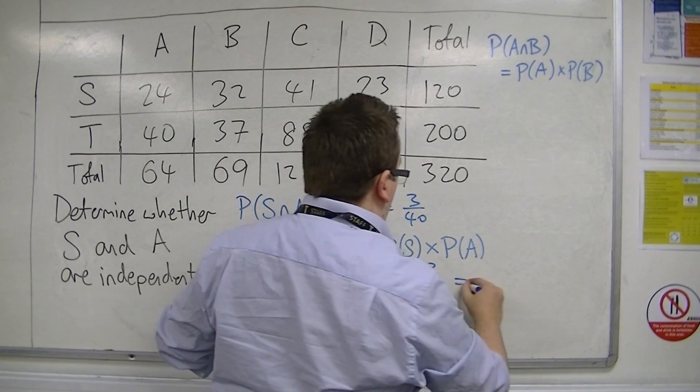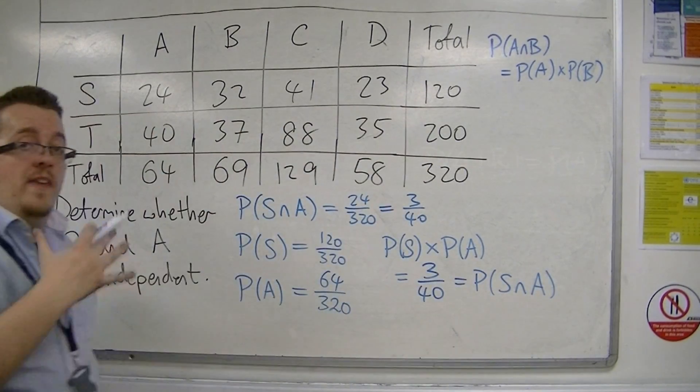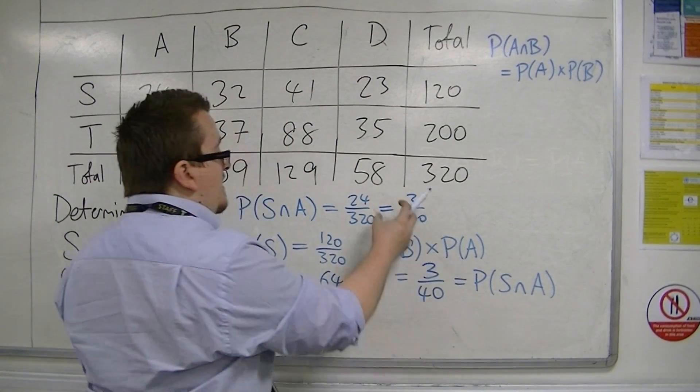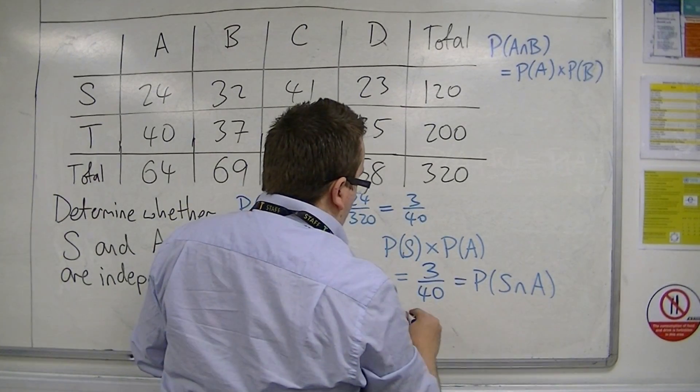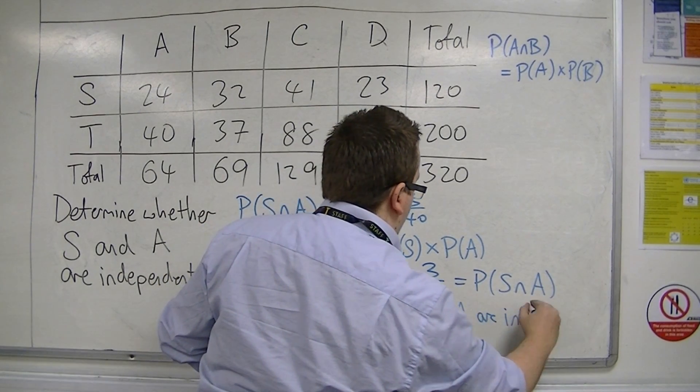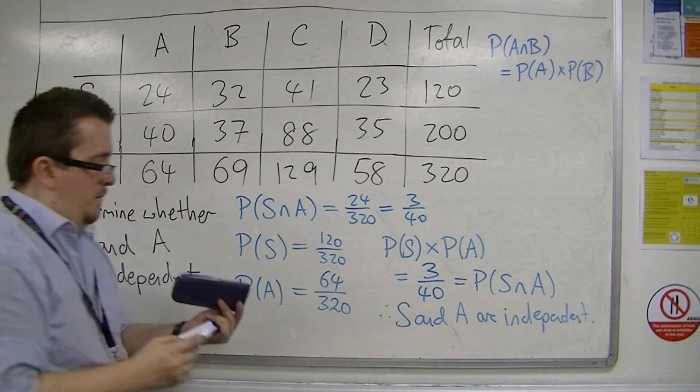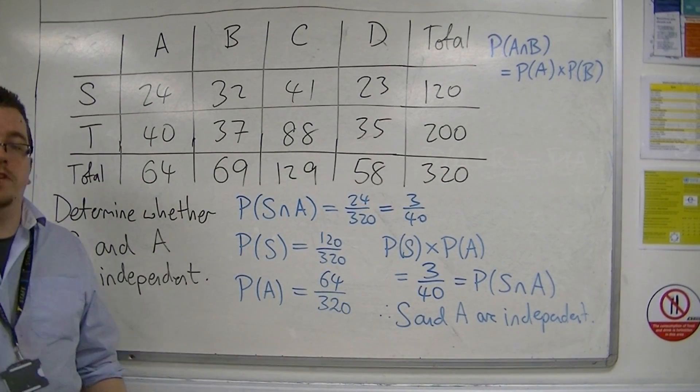So this is equal to the probability of S intersection A. Therefore, because I get the same probability, S and A are independent. And there we have it. That's how we can show that two events are independent.